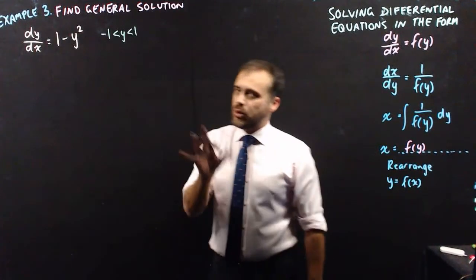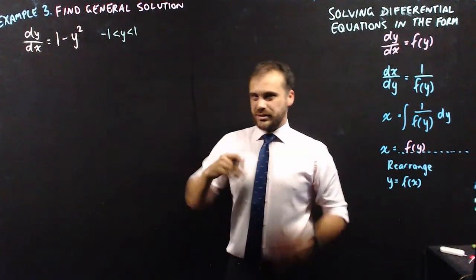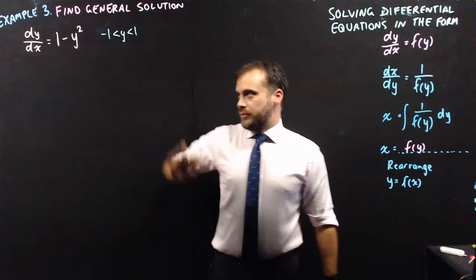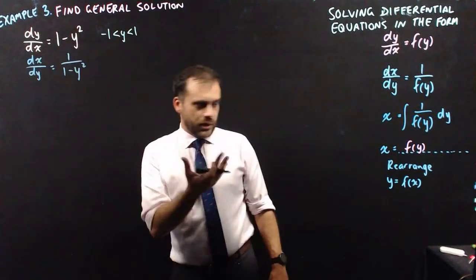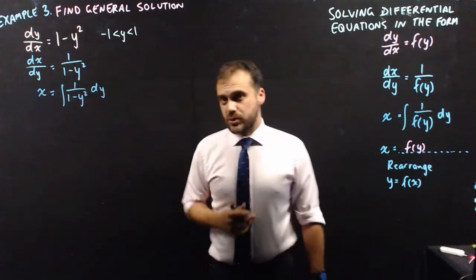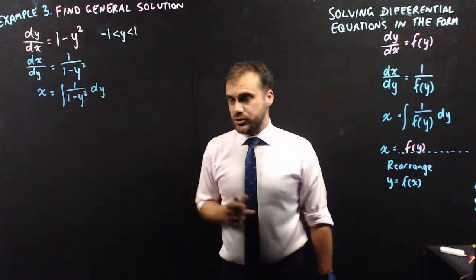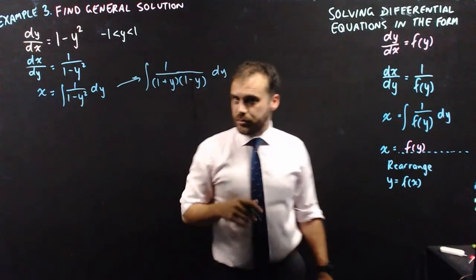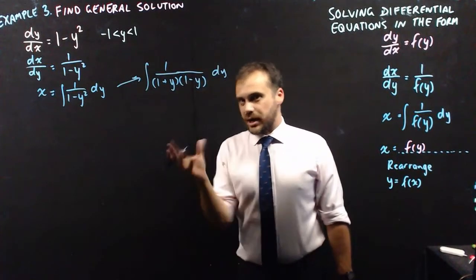Here we go, last one. The algebra gets a bit wild here, but also a little bit tedious. So I'll jump through some of the more boring algebra as we go. First step, reciprocals. Once we've got that, x equals the integral. Now 1 minus y squared is a difference of two squares, which means that that is equal to 1 plus y, 1 minus y on the bottom. Which means that it's a partial fraction.